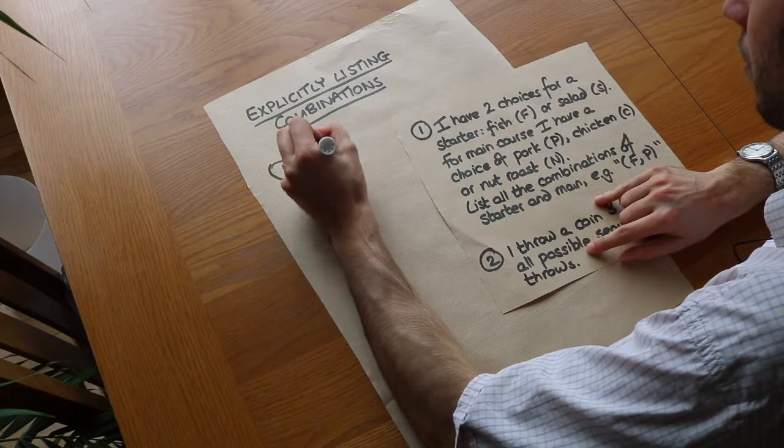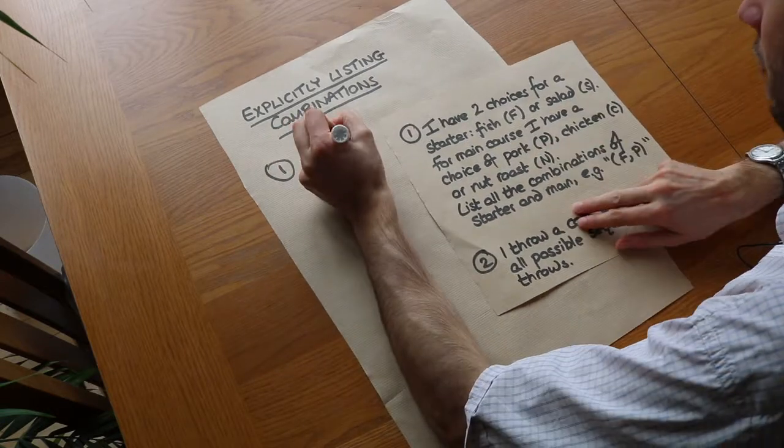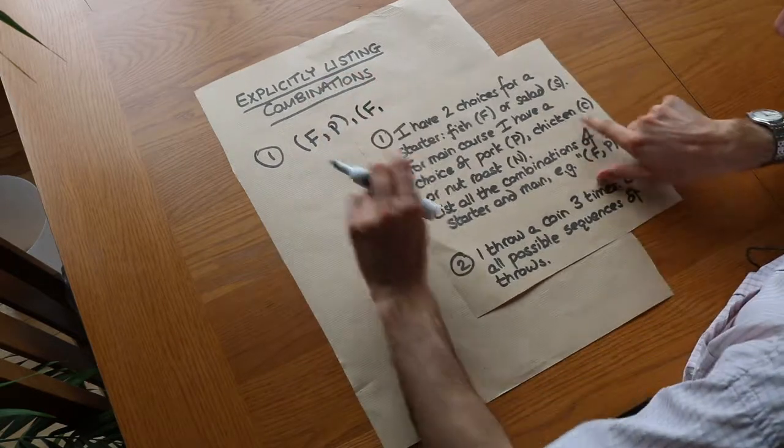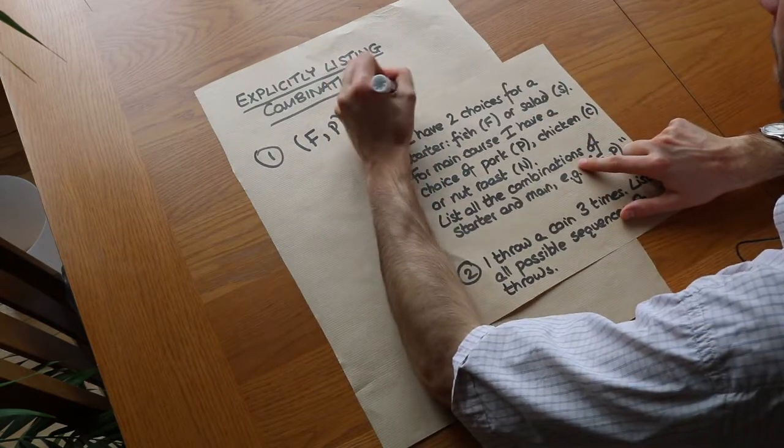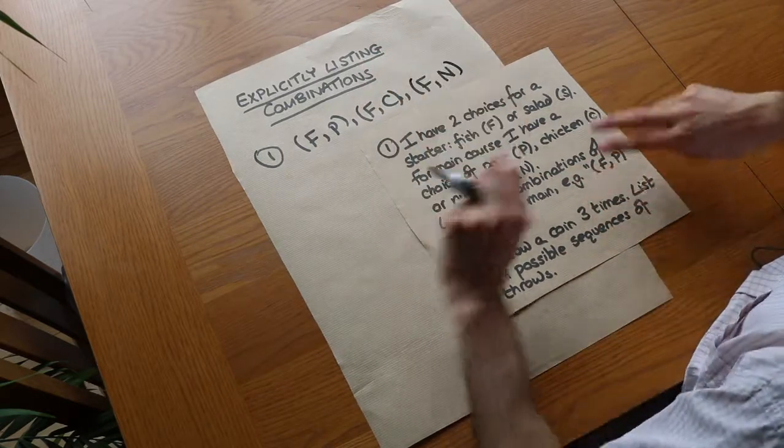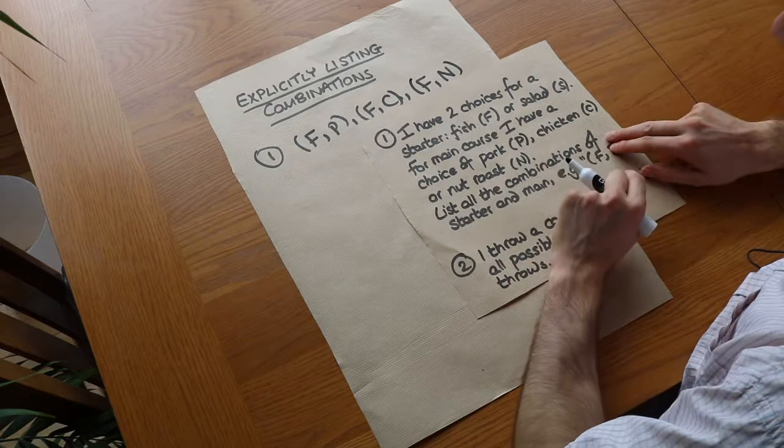So if we fix the fish, we've got fish and pork, FP, which we already have as an example. We could have fish and chicken, and we could have fish and nut roast. So you can see I'm trying to get this in a kind of systematic order rather than just listing them randomly.